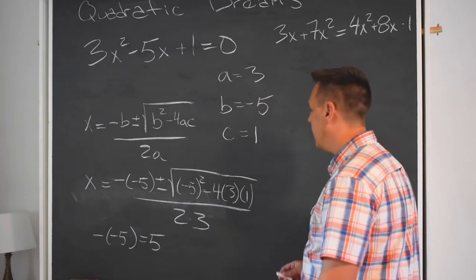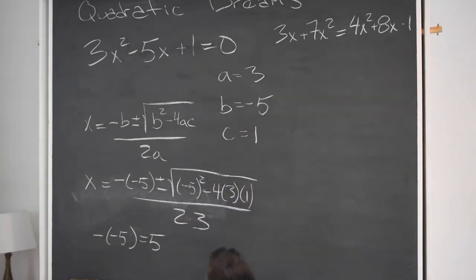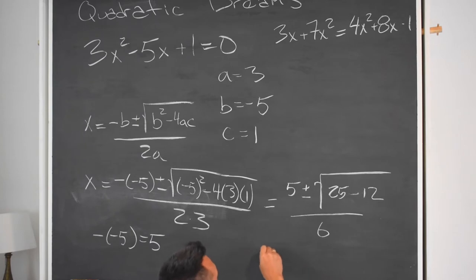Anyway, that's the only hard part of the arithmetic here. Let's see what else we get. That's equal to 5 plus or minus the square root of 25, that's 5 squared, minus 12 all over 6. And 25 minus 12 is 13. So this is 5 plus or minus the square root of 13 all over 6.